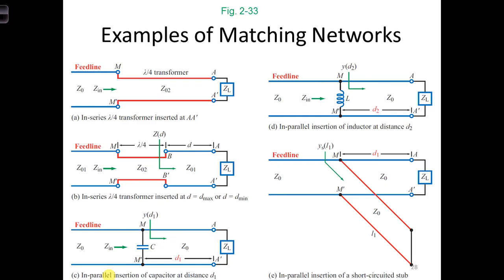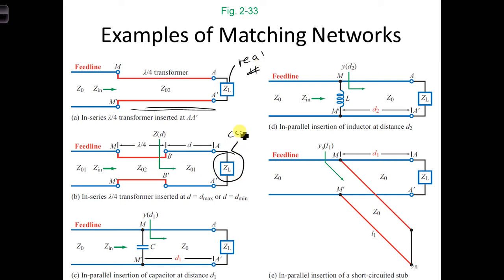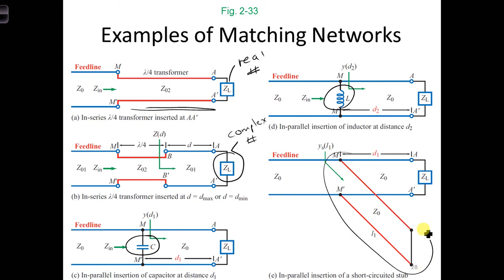To finish off, this slide summarizes all the different ways we can achieve a matching network. We have a quarter-wave transformer that can be placed at the end of the transmission line — and that's if ZL is a real number — or we could have it some distance away from the end of the transmission line if ZL is a complex number. The other three options are circuit elements in parallel with the end of the transmission line: the capacitor, the inductor, and the stub.